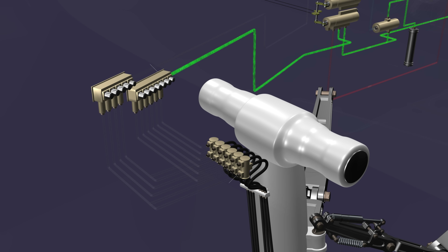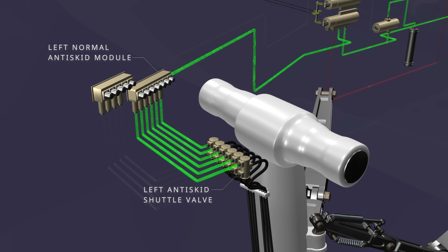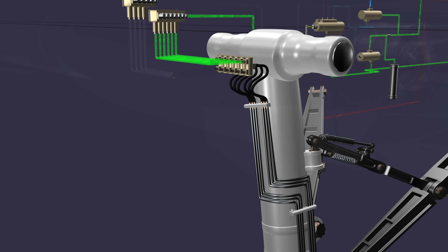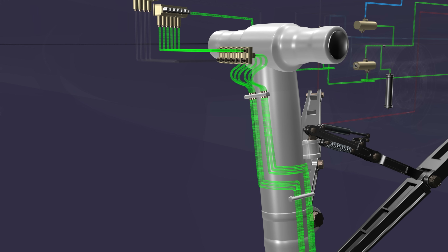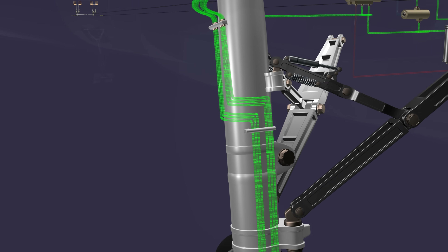The pressure from the metering valve reaches the normal anti-skid module. The anti-skid module transfers the input pressure to six brake lines connected to the anti-skid shuttle valve. The shuttle valve selects the higher pressure for brake application. We will discuss these valves in detail in the anti-skid chapter of the series. For now, let's head to the brakes.